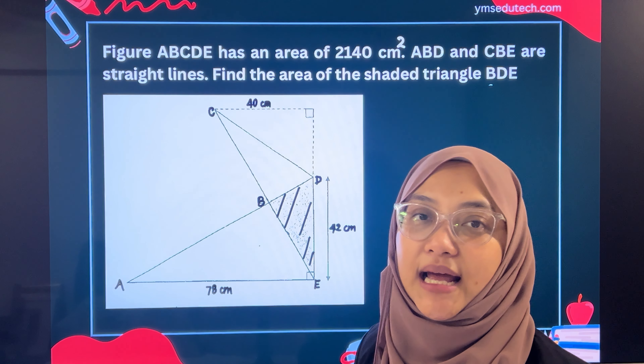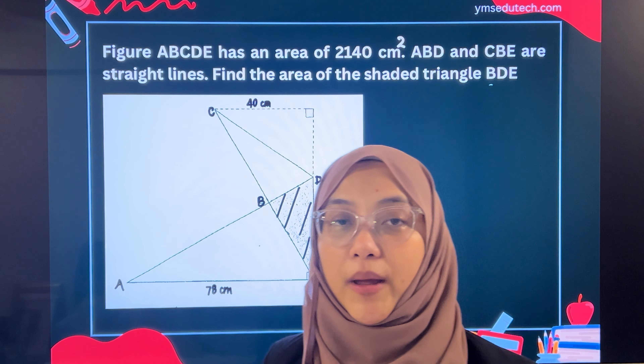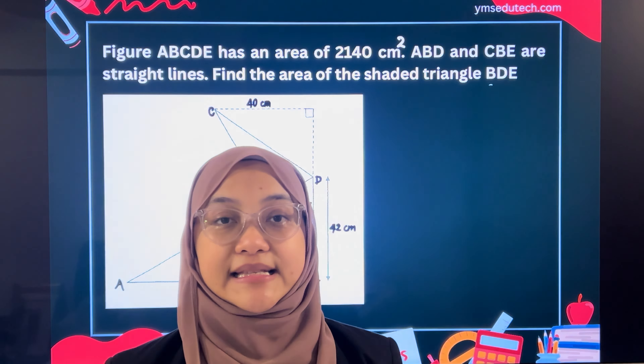This is a commonly asked question whereby figures are being overlapped. In primary school math, we learn heuristics and this falls under the category of Repeated Identity. What is being repeated here? Area of BDE, or the shaded area, is being repeated.